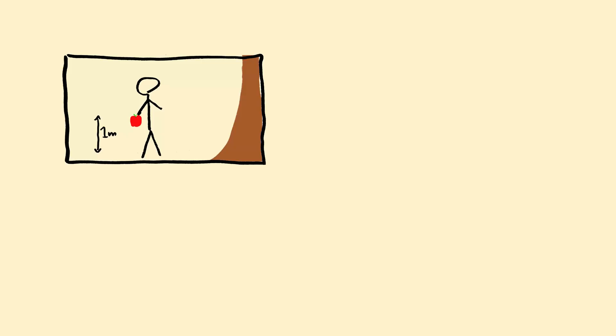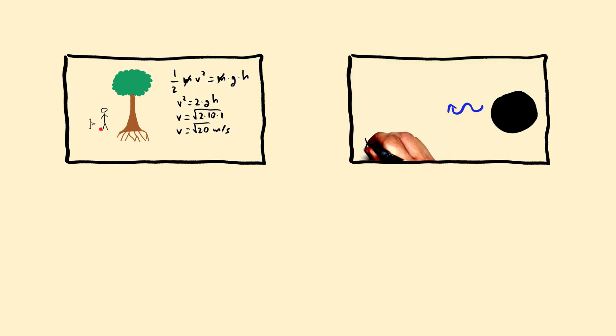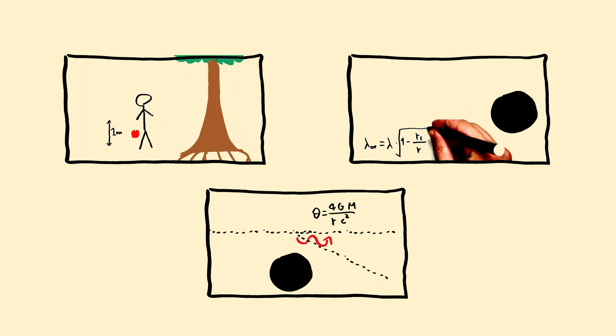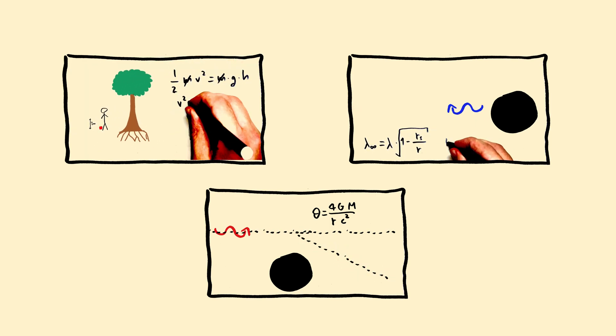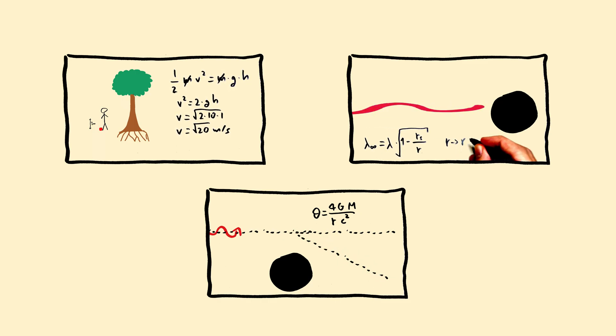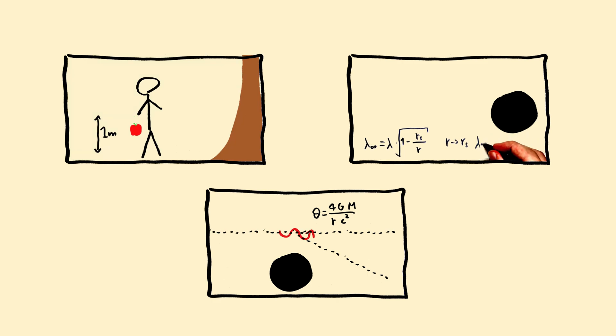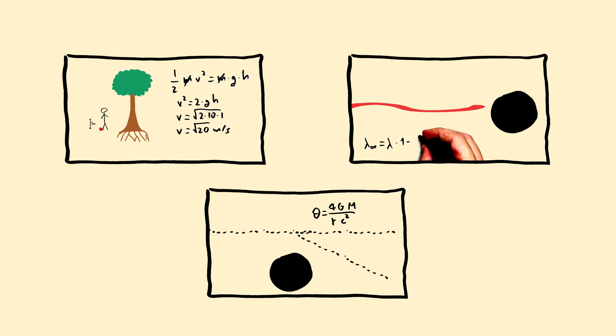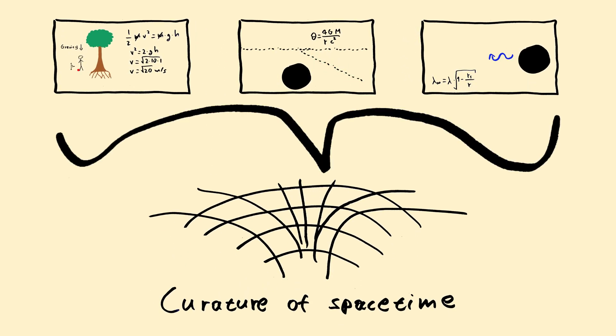But why does gravity behave so differently with light compared to other objects? Why does gravity in one case accelerate an object, and in another case change its wavelength and its direction? Good question. The answer reveals something groundbreaking. Well, the truth is, both the freefall of the apple and the blue shift of light and the lensing of light happen for the exact same reason, which is the curvature of spacetime.